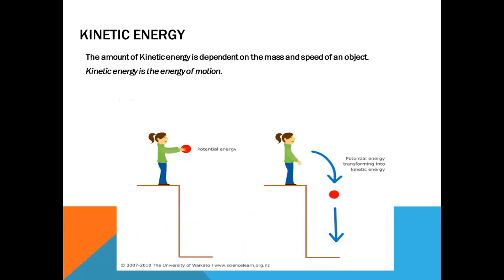Kinetic energy is dependent on the mass and the speed of an object. Picture one is the potential energy — the position of the object. Although this object right here is stationary, that's potential energy. Once you've released it, it will change into kinetic energy and the object will fall. So this is kinetic energy; that was potential energy.